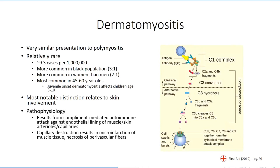A principal difference between dermatomyositis and polymyositis is their pathophysiologies. With polymyositis, we observe a CD8 T-cell-mediated attack on antigens within the endothelium. Dermatomyositis results from a complement-mediated humoral attack against the endothelial lining of arterioles and capillaries supplying muscle tissue.